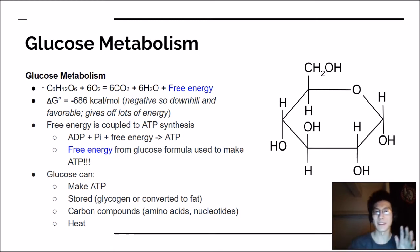Glucose itself is very important in many ways. A few of the ways include making ATP, can be stored as glycogen or converted to fat, the carbons in glucose can be used in carbon compounds like amino acids and nucleotides, and finally glucose can produce heat. So lots of things that glucose can be turned into and used for.